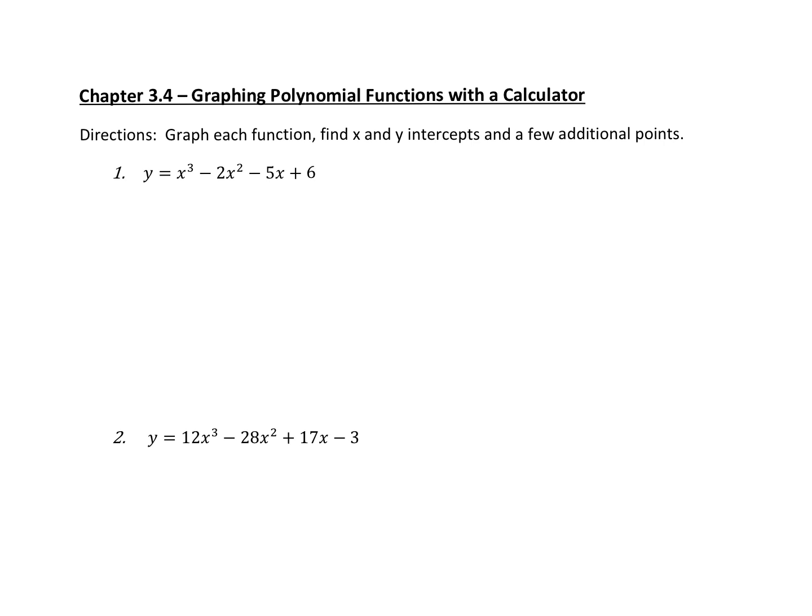Once you find a rational zero from your calculator, you can use that zero and do synthetic division with it to keep bringing down the polynomial one power at a time until you can get it to a function that can be either factored or solved using the quadratic formula. If it's actually a four-term polynomial, you may also be able to factor it by grouping.